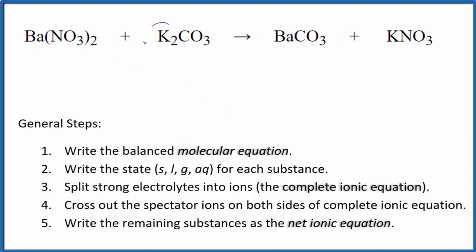As I look at this, I see I have two potassiums here, just one here. Let's put a two in front of the potassium nitrate. That balances the potassium atoms, two nitrates, I have two nitrates here, that's good. I have a barium and a barium, that's balanced, and then a carbonate and a carbonate. So this is the balanced molecular equation.